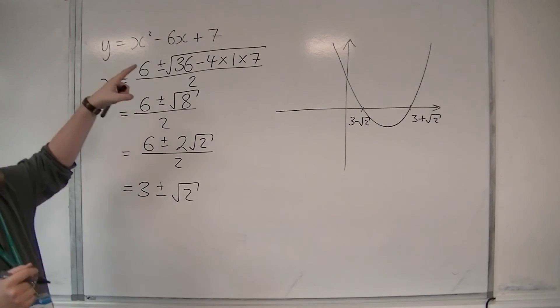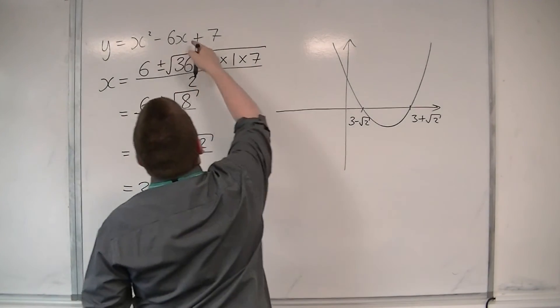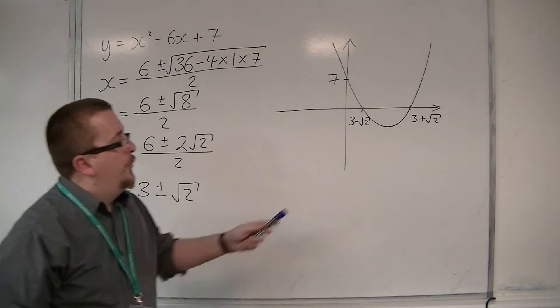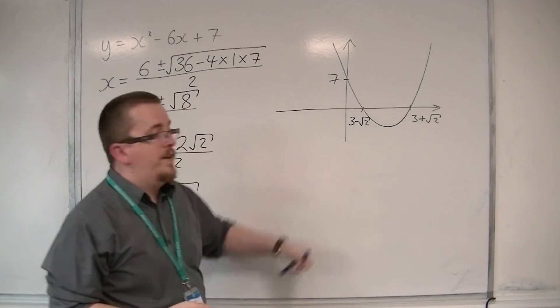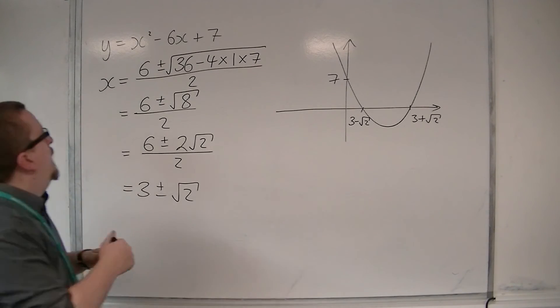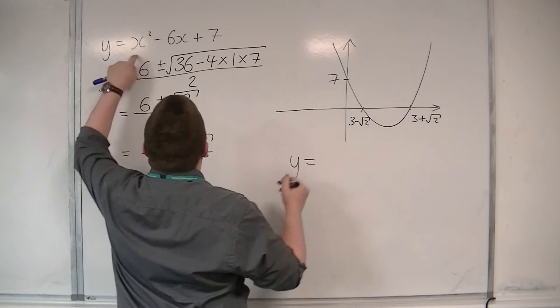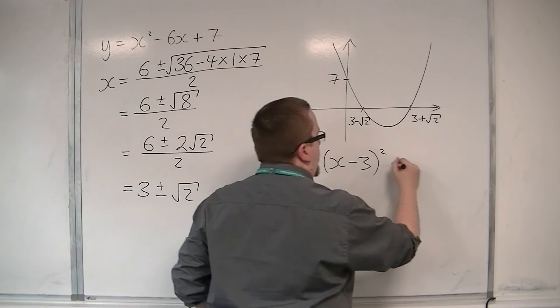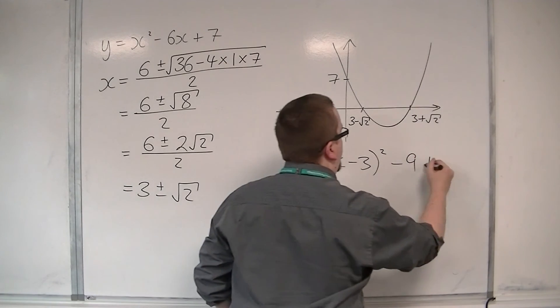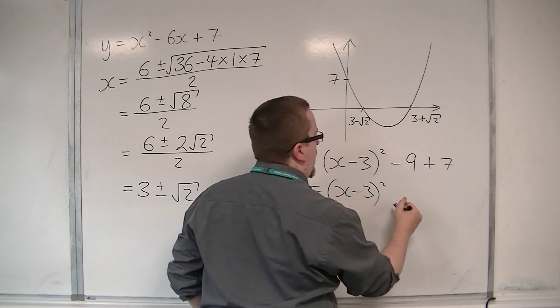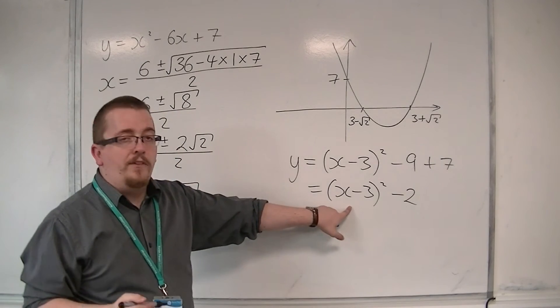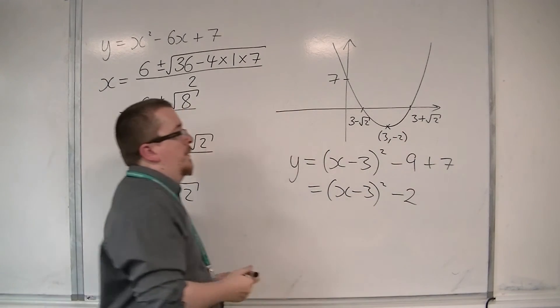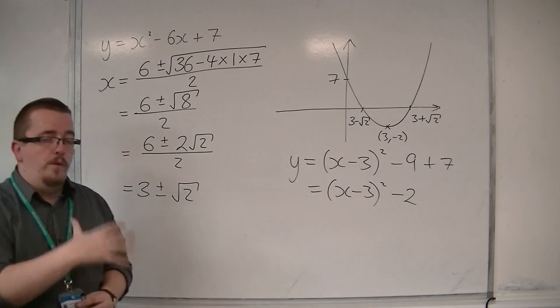And it goes through the y-axis when x is 0, which would be 7. Now we could also identify where the vertex is, and that would be using completed square. So if we do that, then this would be x, half the 6, so minus 3, squared. Take away the square of minus 3, so minus 9, plus 7. So we have x minus 3, all squared, minus 2. And so the vertex of this parabola is at 3 minus 2. Okay, and there we have identified all the interesting points.